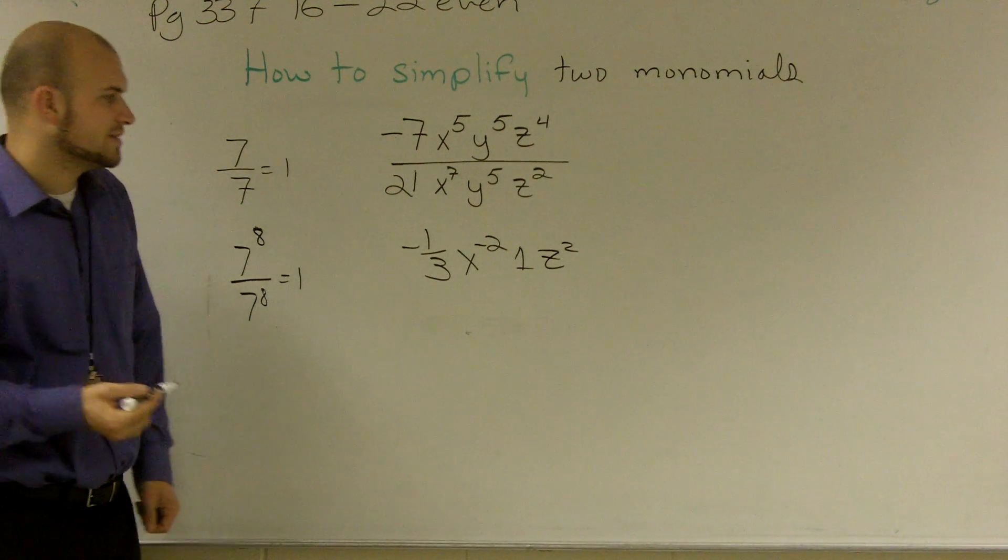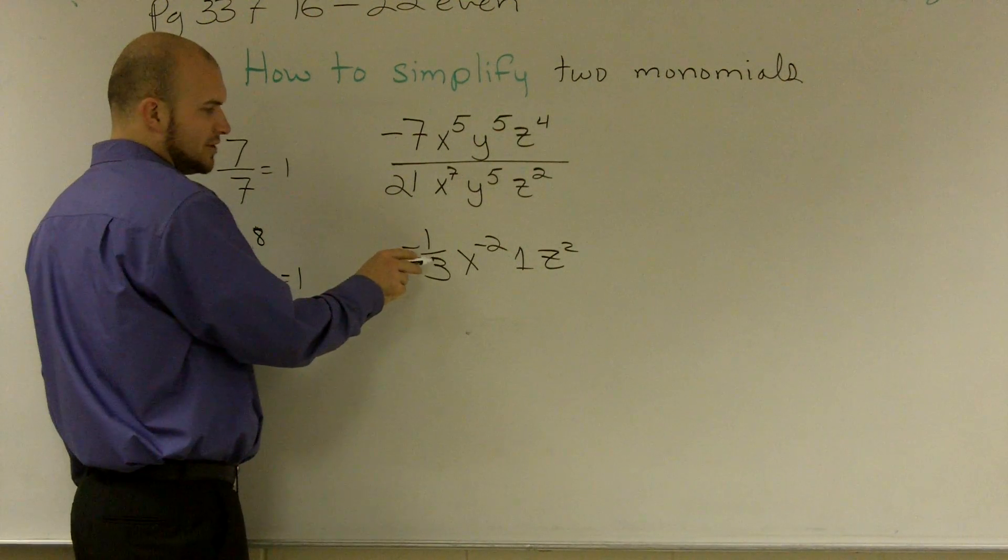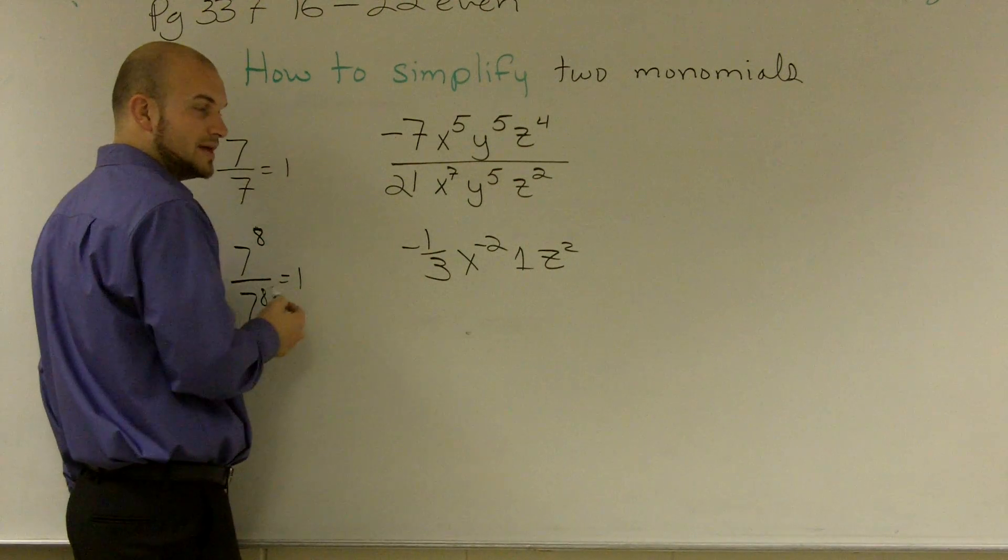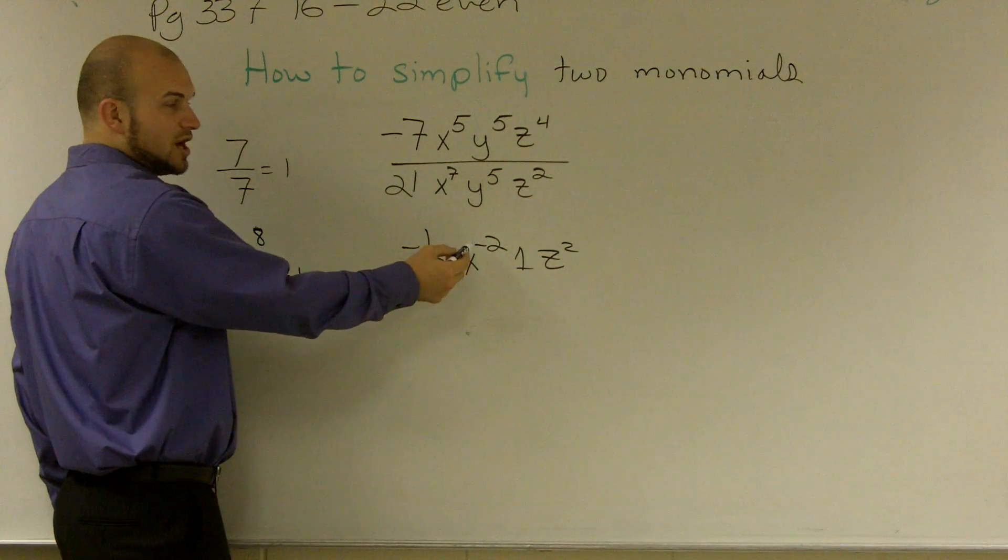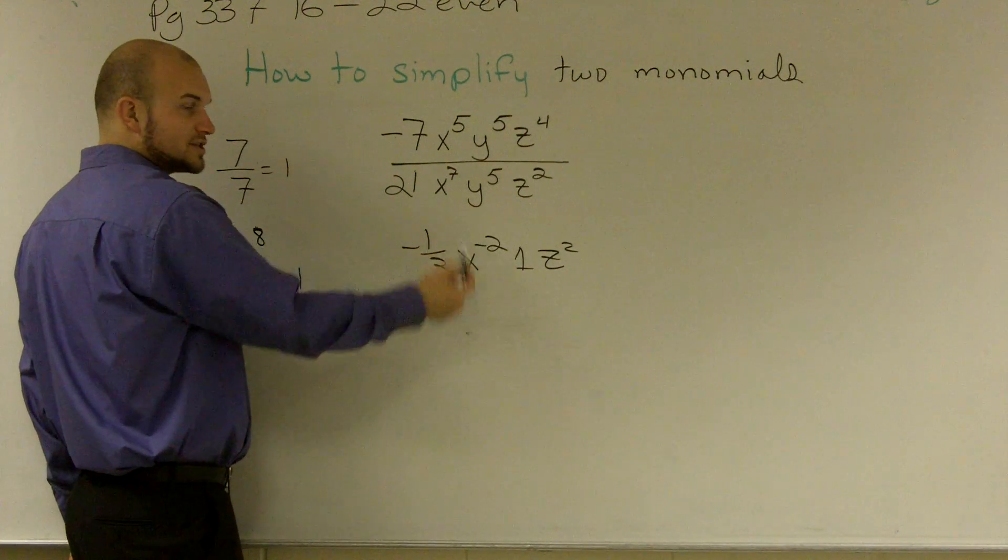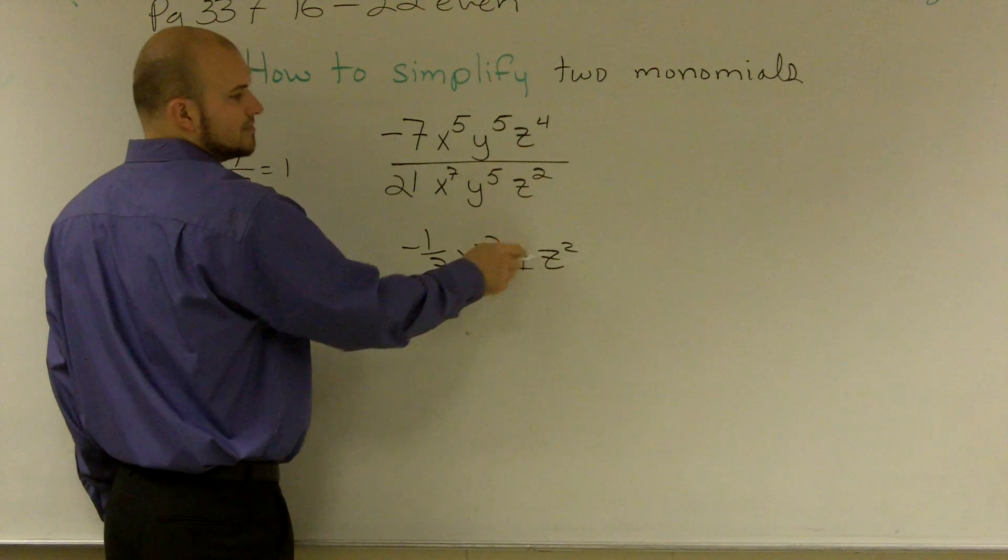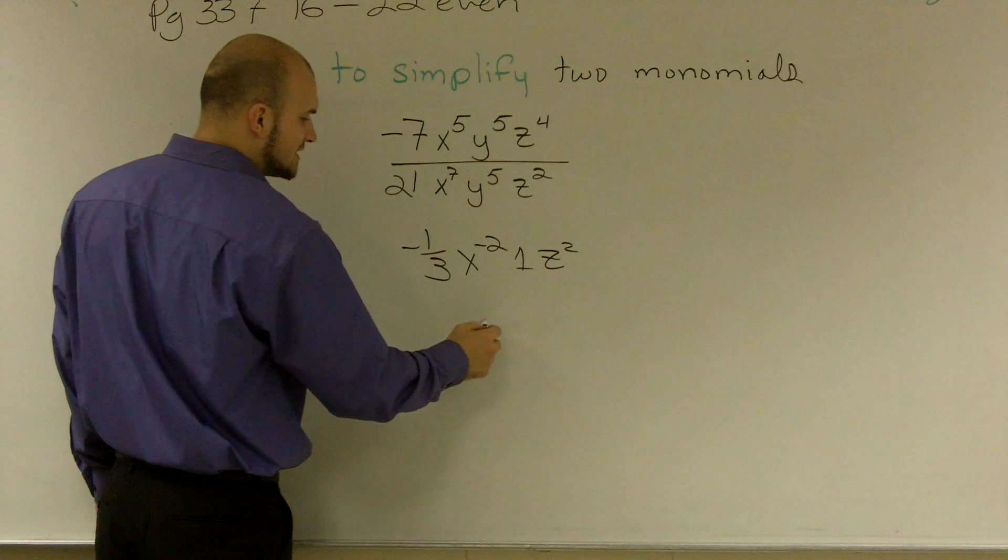So now I'll just go ahead and rewrite this. I know that my 3 is essentially a fraction, so I can write the 3 on the bottom. My x to the negative, using the law of exponents, I know that the x squared is going to go on the bottom. And my 1 times z squared is the only thing that's going to be on top.